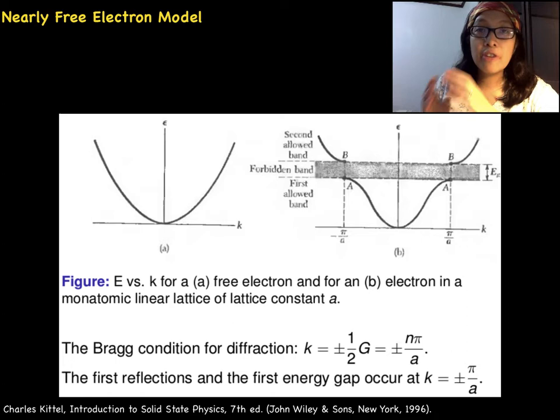Let's emphasize the Bragg condition for diffraction. Furthermore, the first reflections and the first energy gap occur at k equals negative π over a and k equals positive π over a. The region in k-space from negative π over a to positive π over a is the first Brillouin zone, remember?